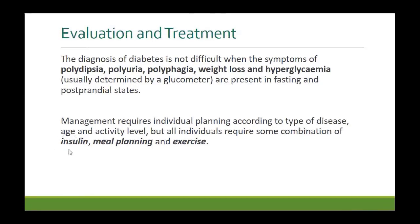Management of diabetes requires individual planning according to type of disease, age, and activity level. For Type 1 diabetes, the main problem is lack of insulin because beta cells are not producing enough, so insulin must be provided. Patients must take meals and insulin in a scheduled pattern, combined with meal planning and exercise, to maintain a healthy lifestyle.